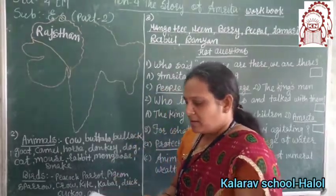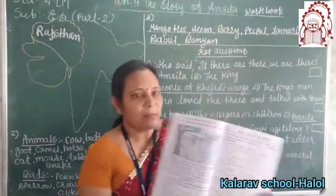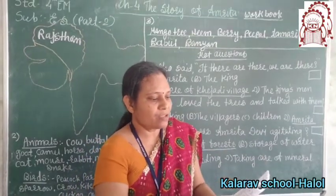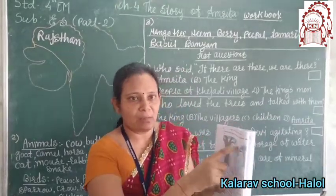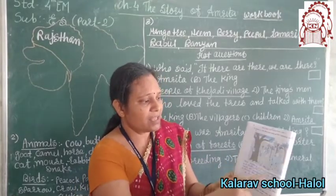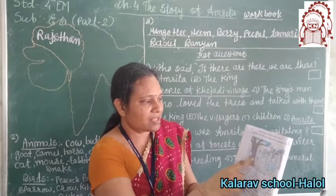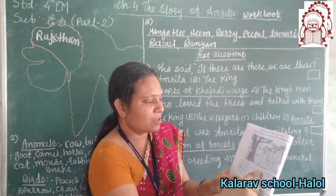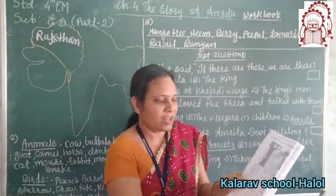Now turn the page. Here are some pictures given. Observe the given picture carefully and write five sentences about it. It is the picture of Kejari village — Amrita's village. Many trees are there, the sun is there, cow, buffalo, some children are playing, a squirrel is there, and a parrot is on the tree. We have to write: this picture is of the trees, greenery, buffalo, and children of Amrita's village.